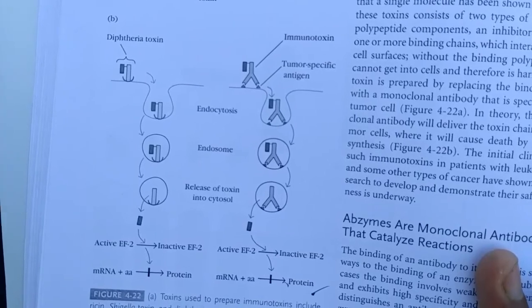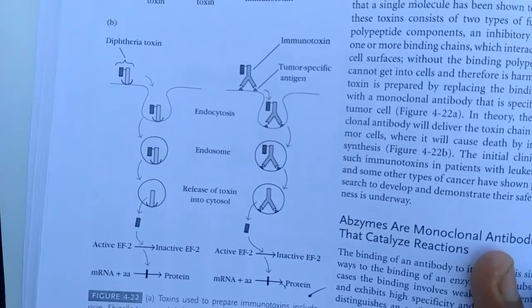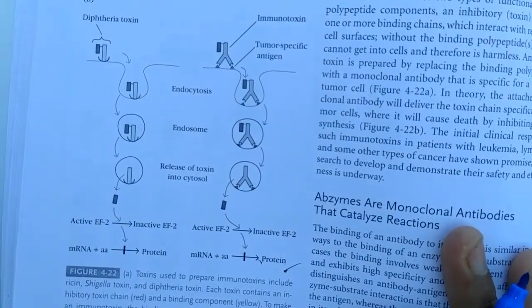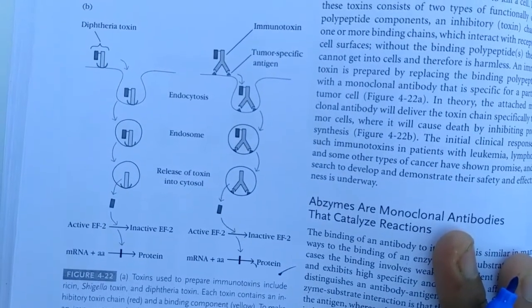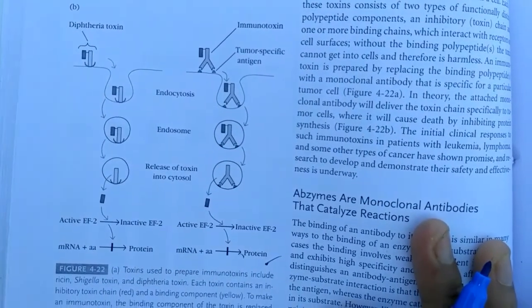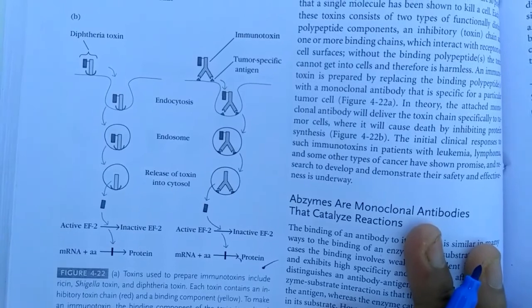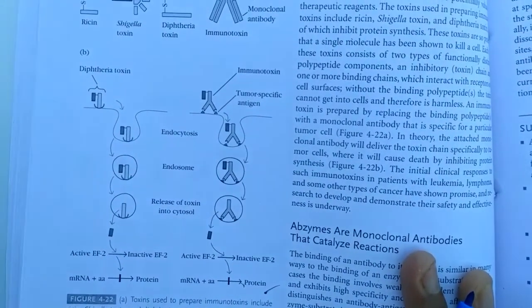You can see in the endocytic pathway it is released. It cannot be digested by lysosome. It is released here and it is inactivating the transcription and translation. So the transcription and translation inhibition caused by the immunotoxin will inhibit the growth of the microbe and it will be useful as a booster for the immunity to the patient.